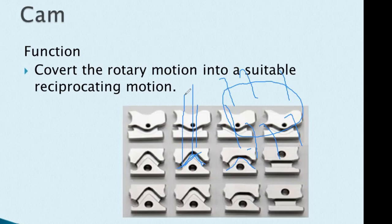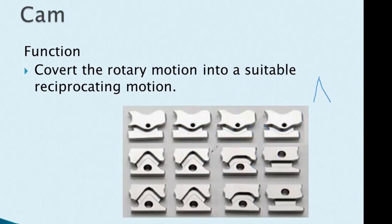When you put the needle into the cylinder, you can use the same structure. The three examples of cams in knitting are: knit cam, tuck cam, and miss cam.